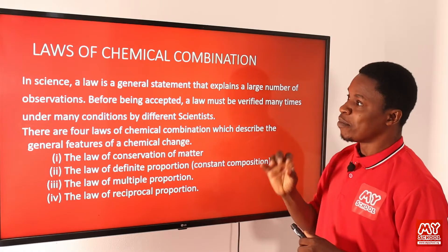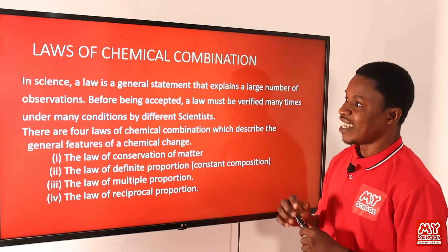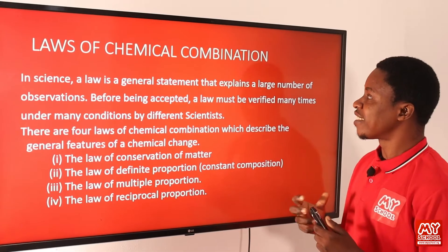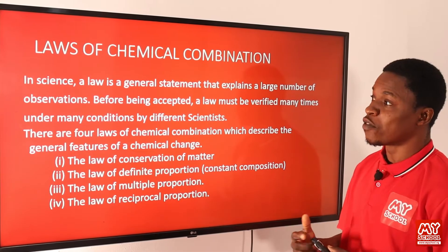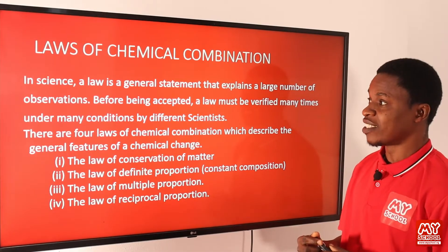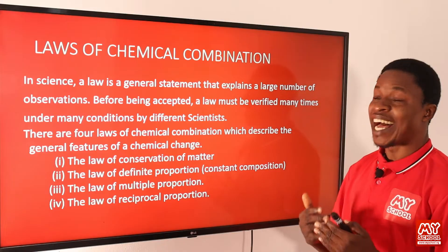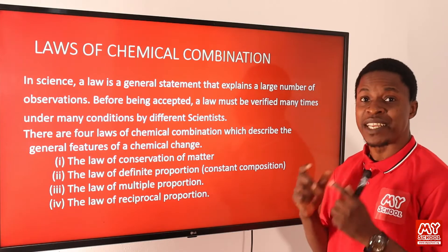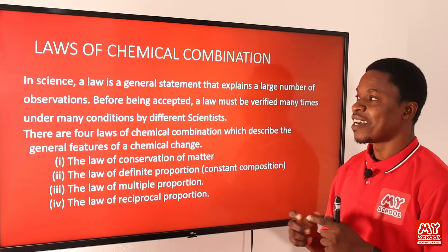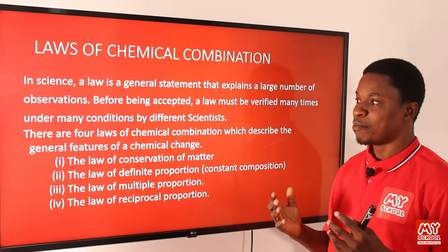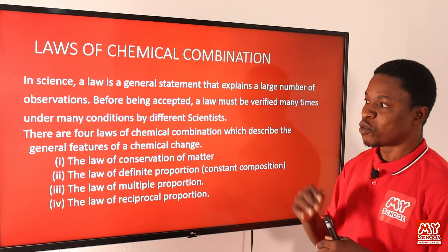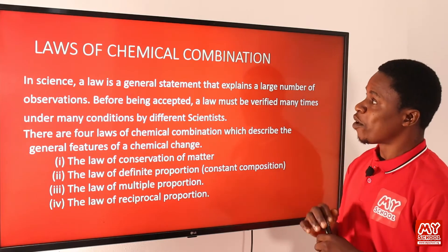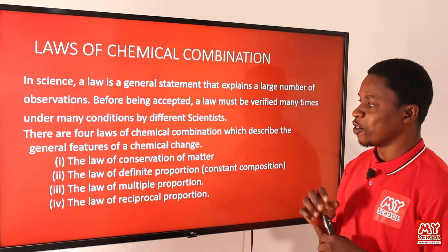Laws of chemical combination. In science, a law is a general statement that explains a large number of observations. Before any law is accepted, it must be verified many times under many conditions by different scientists before it can be ascertained and said to be a law. Under this law of chemical combination, we'll be looking at four laws.